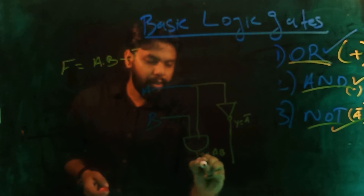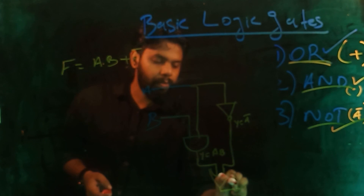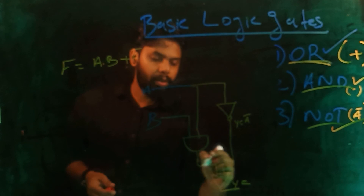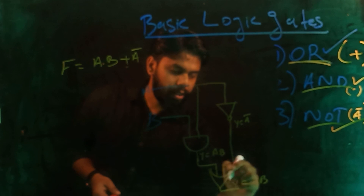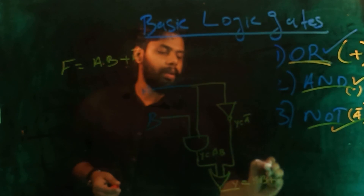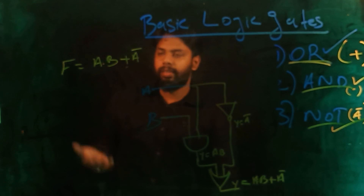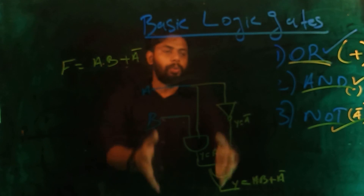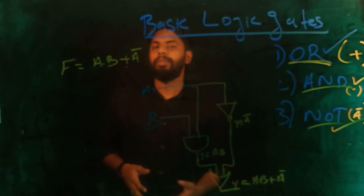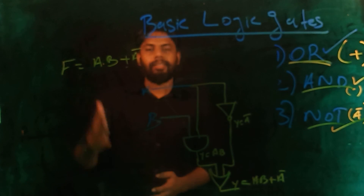So F is equal to A dot B plus A bar. We have an OR gate with two inputs: one input is AB from the AND gate and the other is A bar from the NOT gate. The output Y is equal to A dot B plus A bar. That is one example circuit using basic gates. Now some examples just to practice. That's clear.